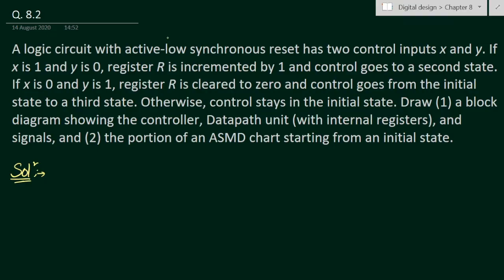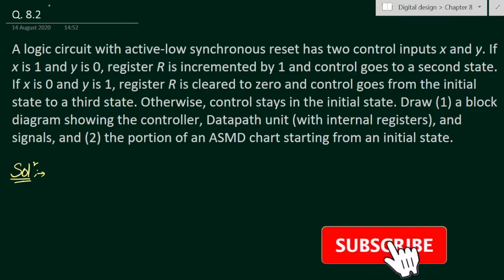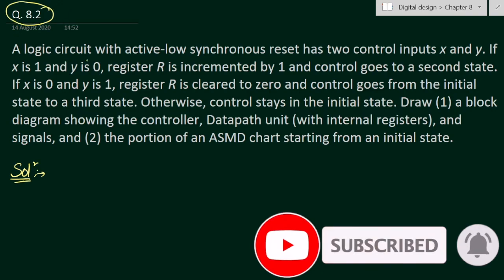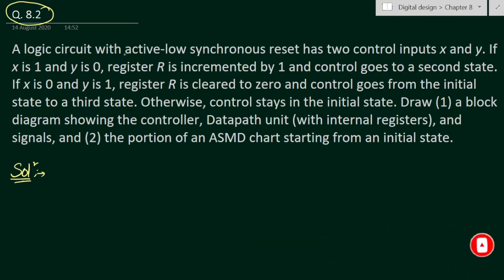In this video we will solve problem number 8.2 from chapter number 8. The problem is a logic circuit with active low synchronous reset signal, which has two control inputs x and y.